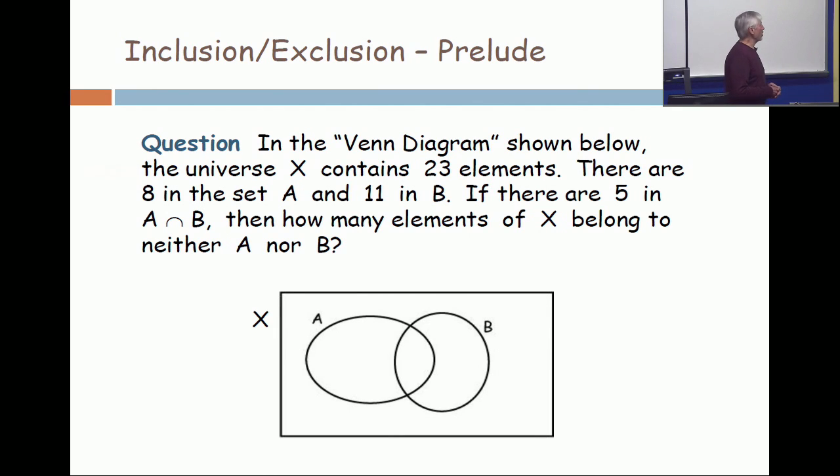The teacher was telling you, I have a universe. This set X, this universe, contains 23 elements. There are eight elements in the set A. There are 11 in the set B. And there are five elements that belong to both A and B. How many elements in the universe belong to neither A nor B?